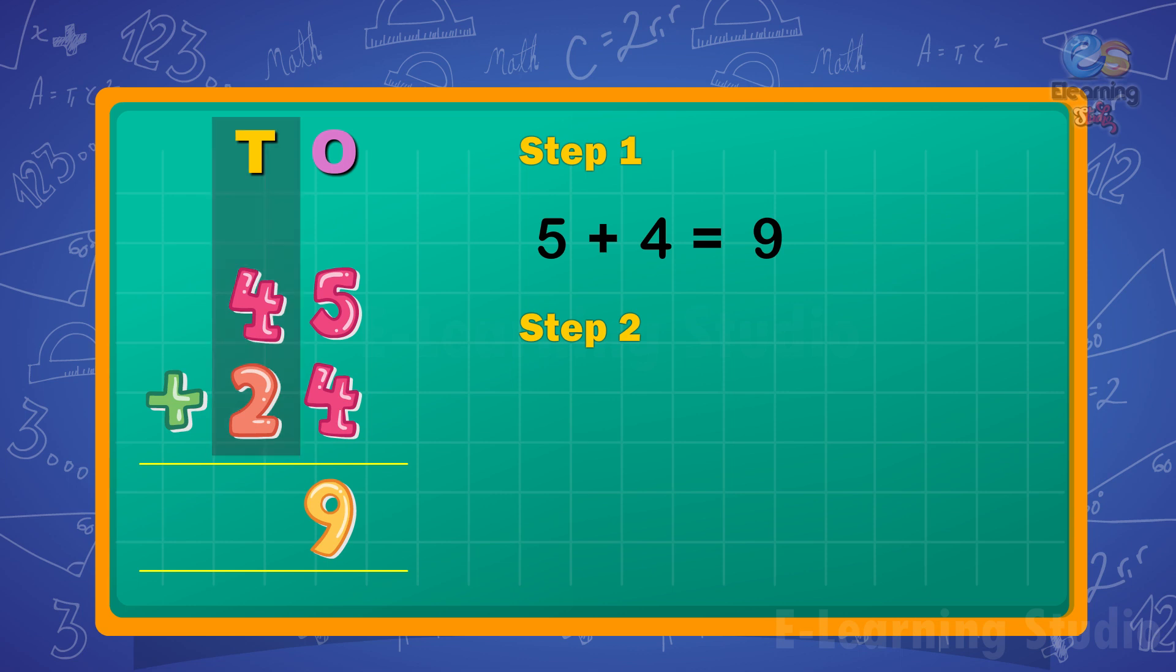add the tens. 4 plus 2 equals 6. Write 6 under the tens column. Thus, the sum is 69.